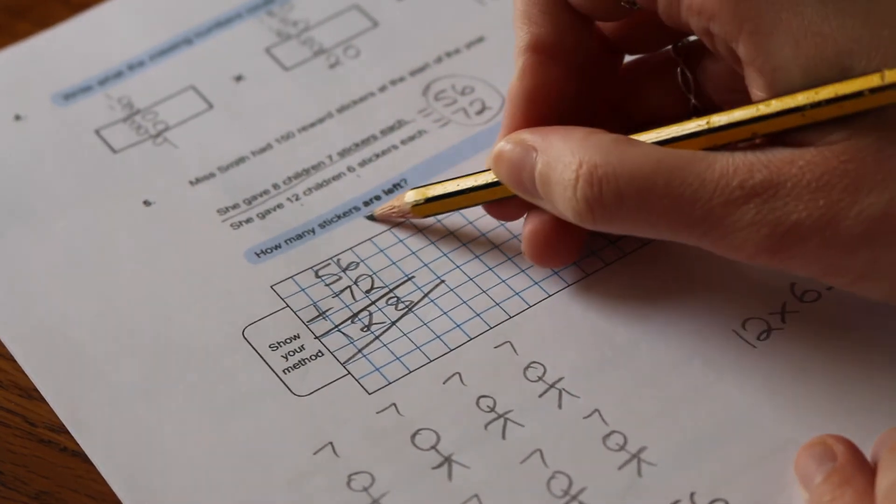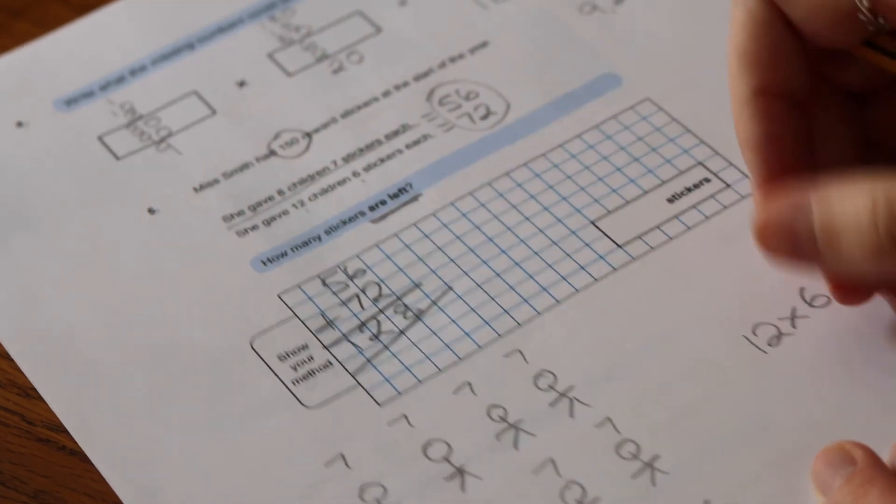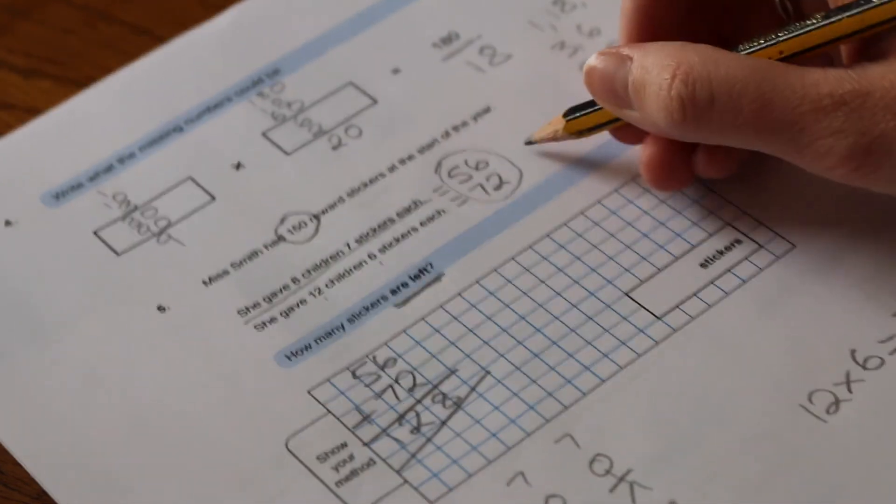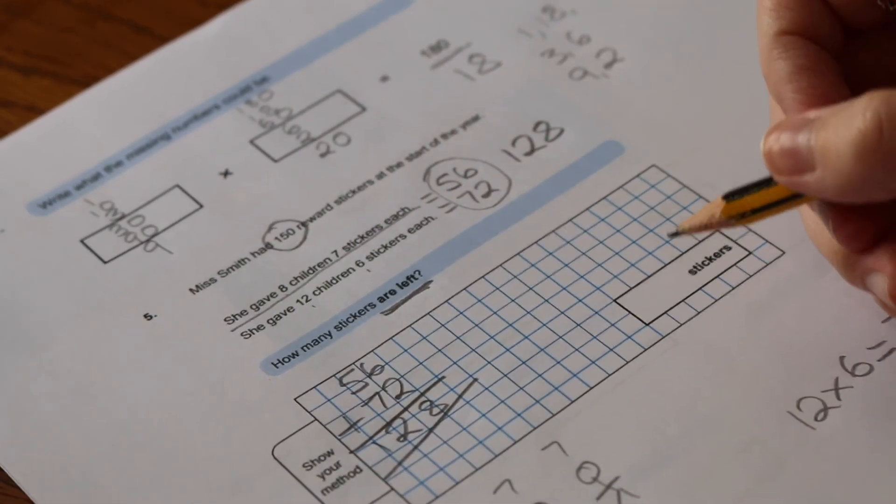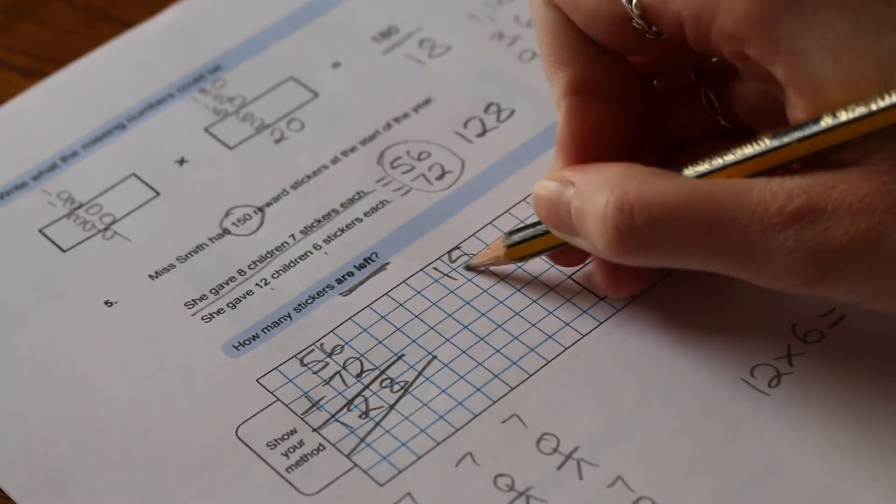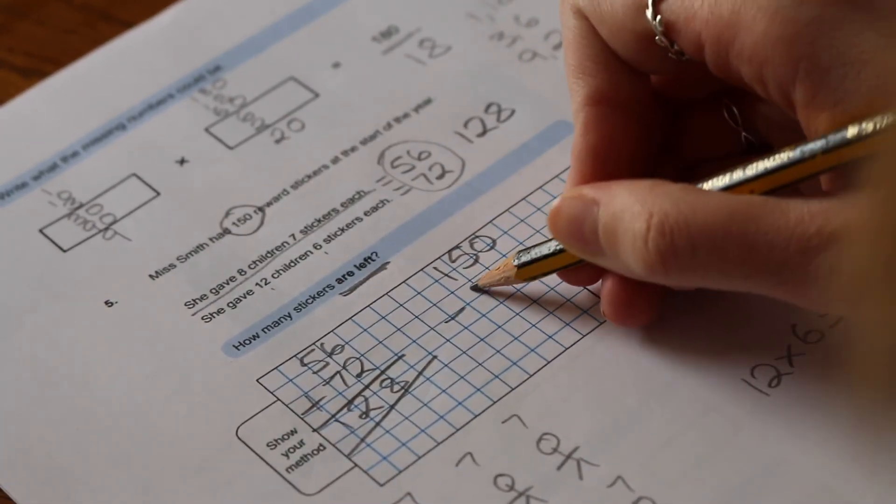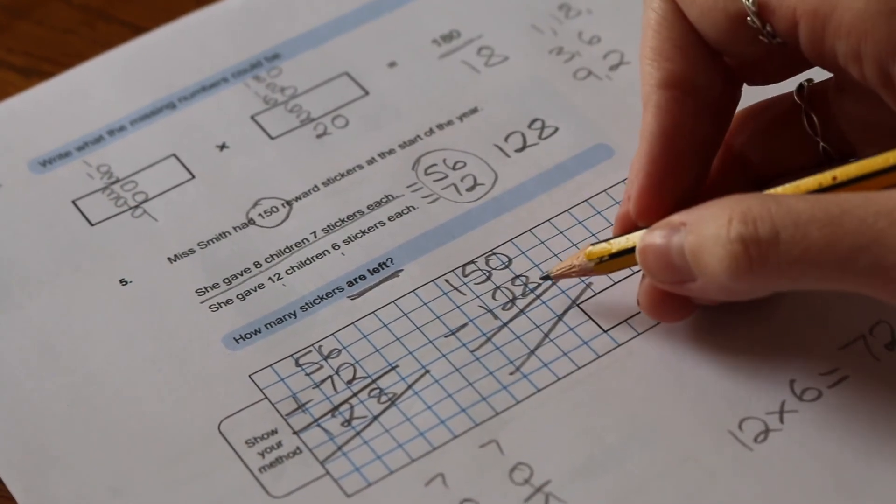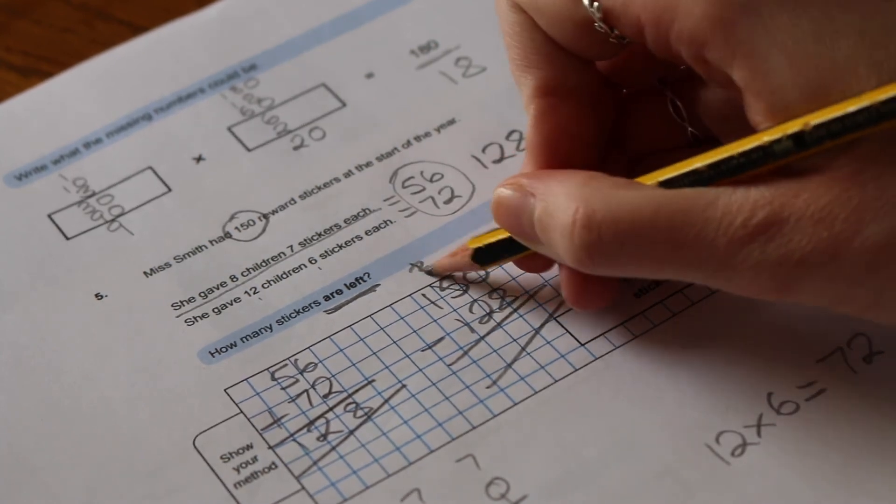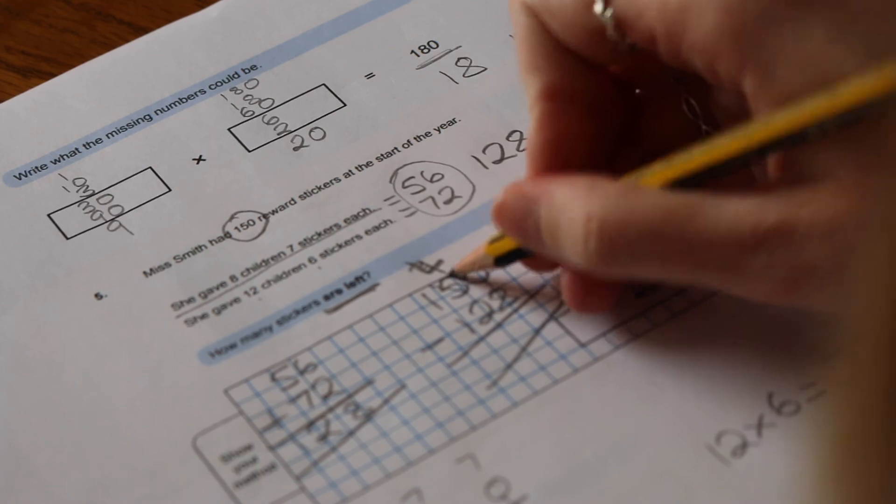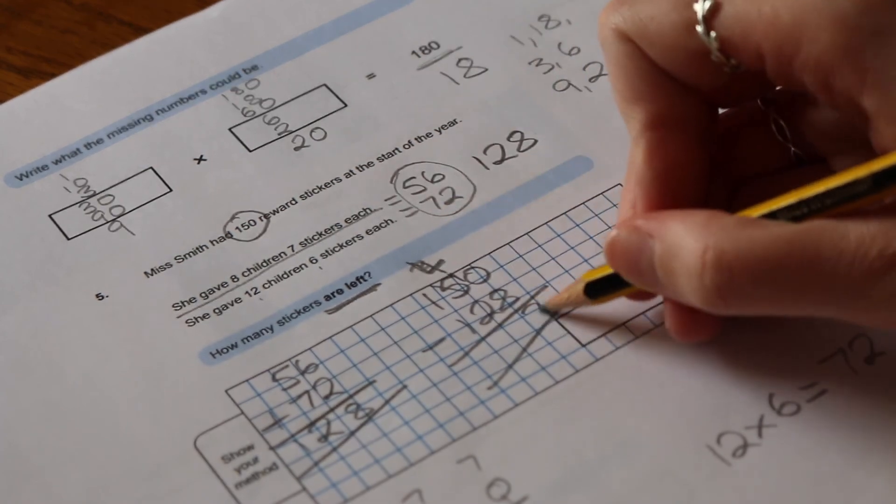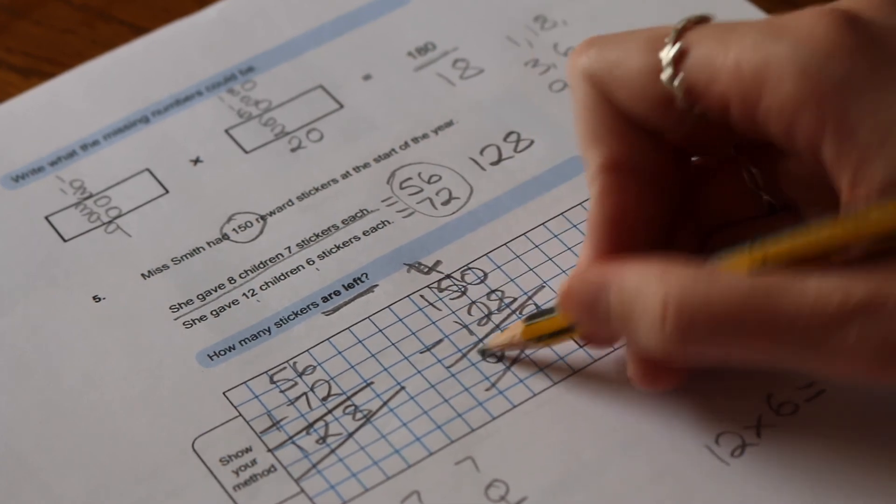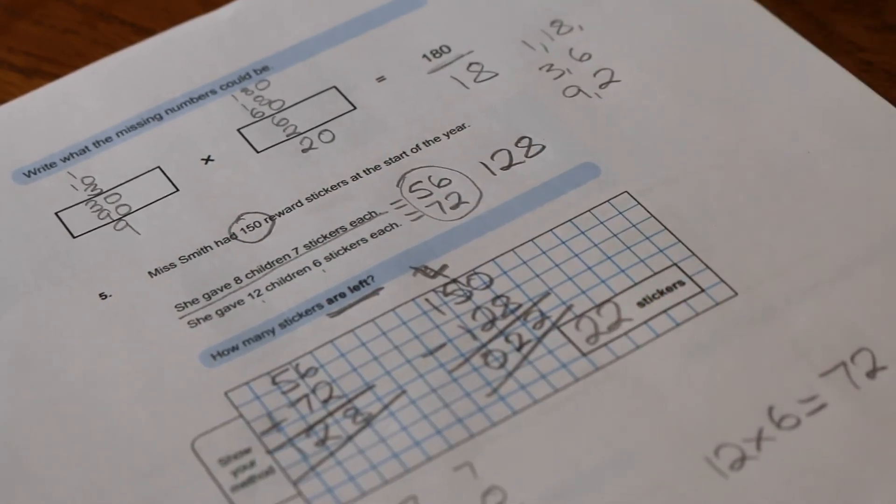Then the question is how many stickers are left. She started with 150 stickers, she's given out 128 stickers, so to find out how many are left we need to do 150 take away 128. We can't do zero take away 8, so we need to exchange—that becomes a 4, not a 3. So 10 take away 8 is 2, 4 take away 2 is 2, and 1 take away 1 is 0. So she's left with 22 stickers.